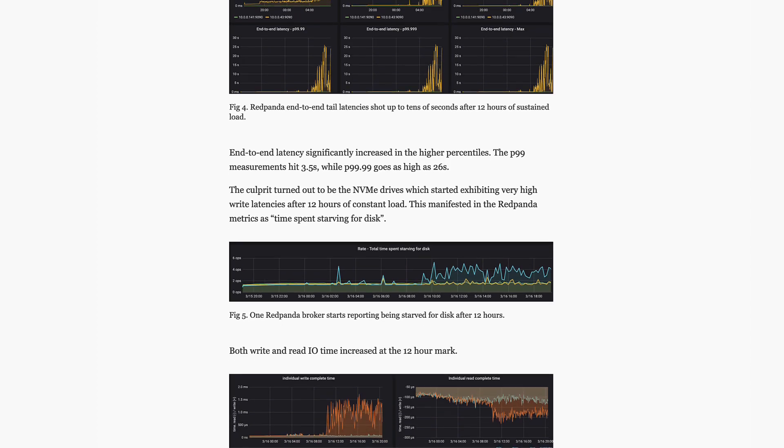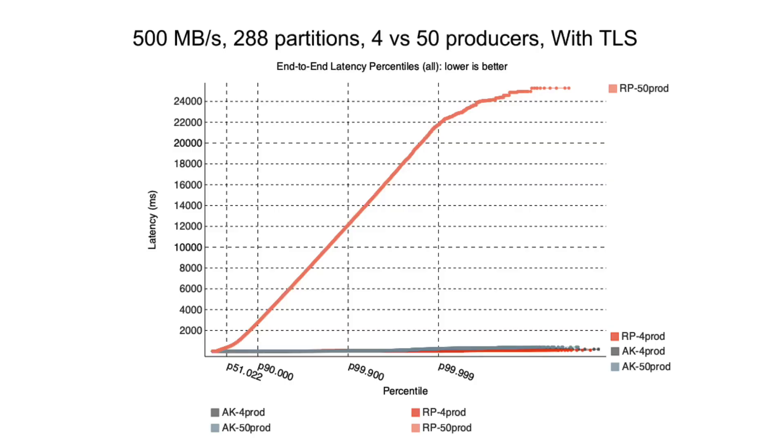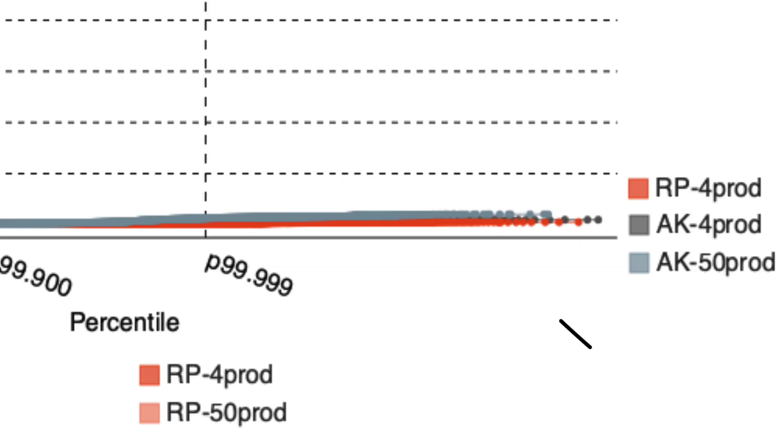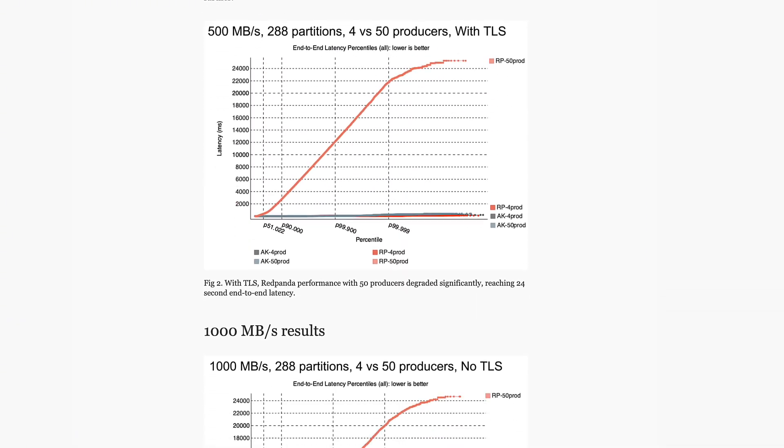But Jack Van Lightly, principal technologist at Confluent, ran many performance tests between Kafka and Red Panda and claims that Red Panda at four producers performs really well. But if you increase the number of producers to 50, it actually performs worse than Kafka. If you look closely, Red Panda performs slightly better than Kafka when using four producers. Also, according to Van Lightly, Kafka performs better with a higher number of partitions than Red Panda. Jack has done a lot of testing and produced a ton of graphs and results — I highly recommend you check out his article and the Hacker News thread discussing it. It looks like with the right hardware and workload, Red Panda can outperform Kafka, but if you tweak the workload or hardware, Kafka can outperform Red Panda.